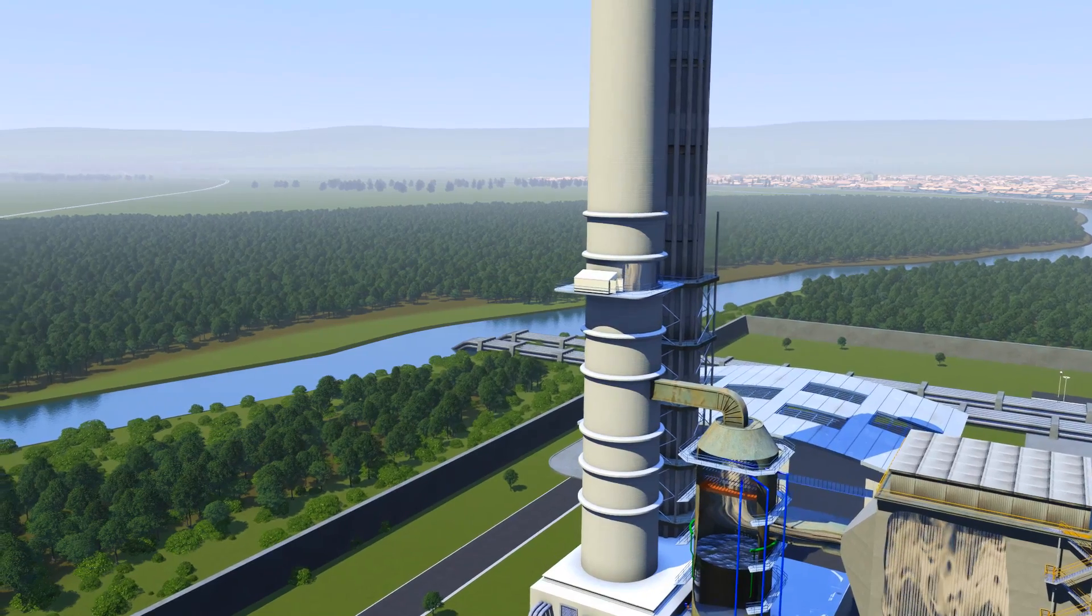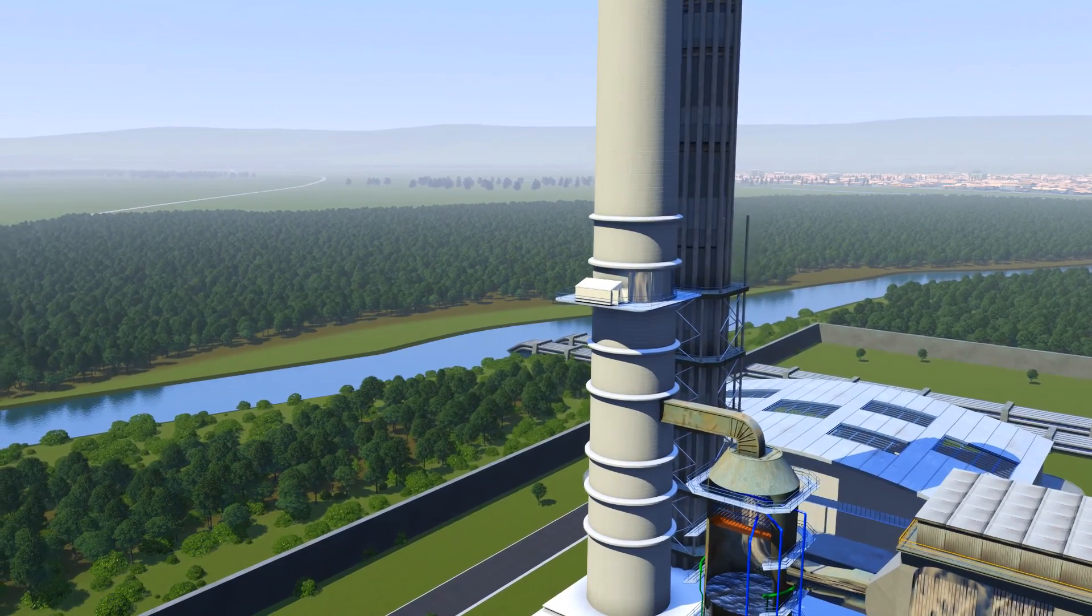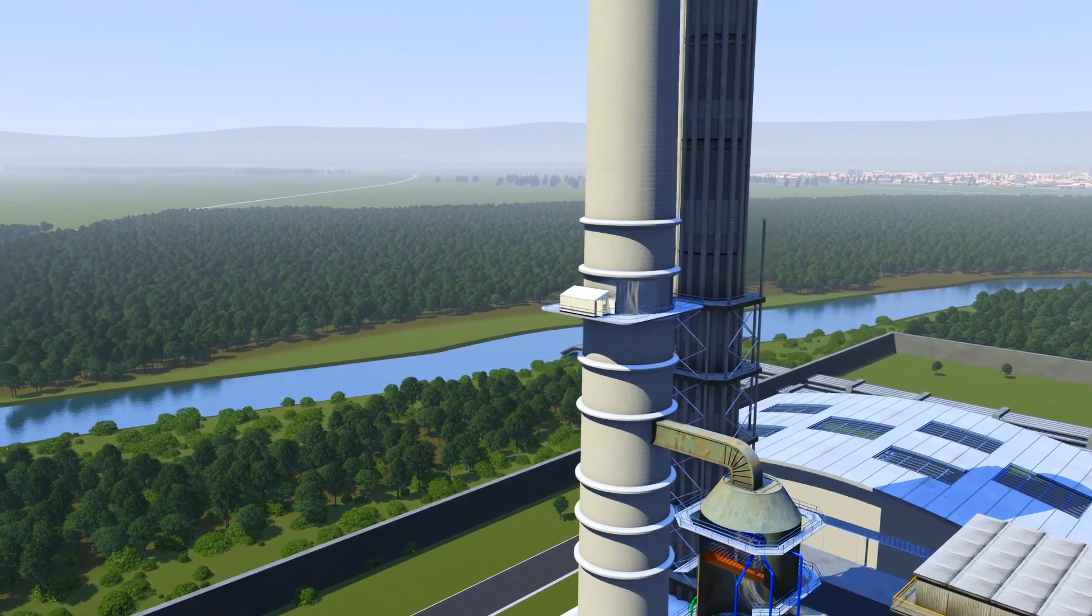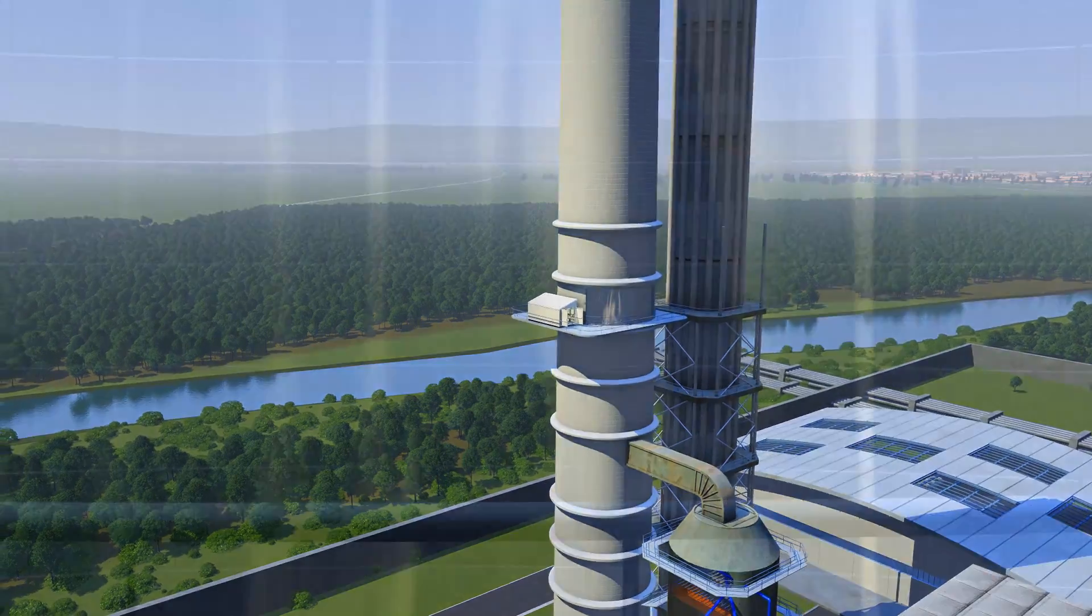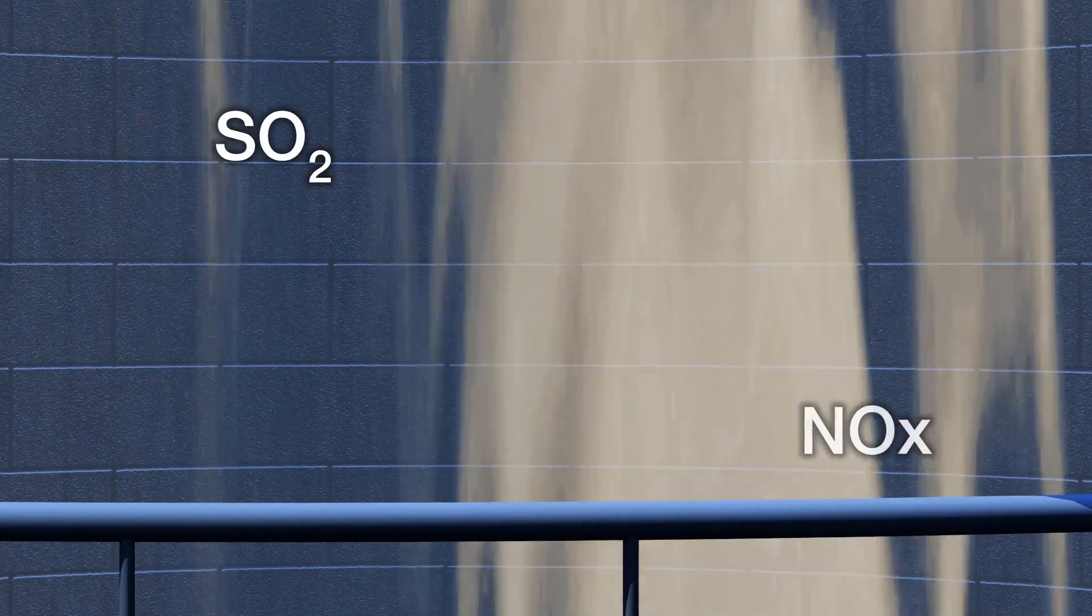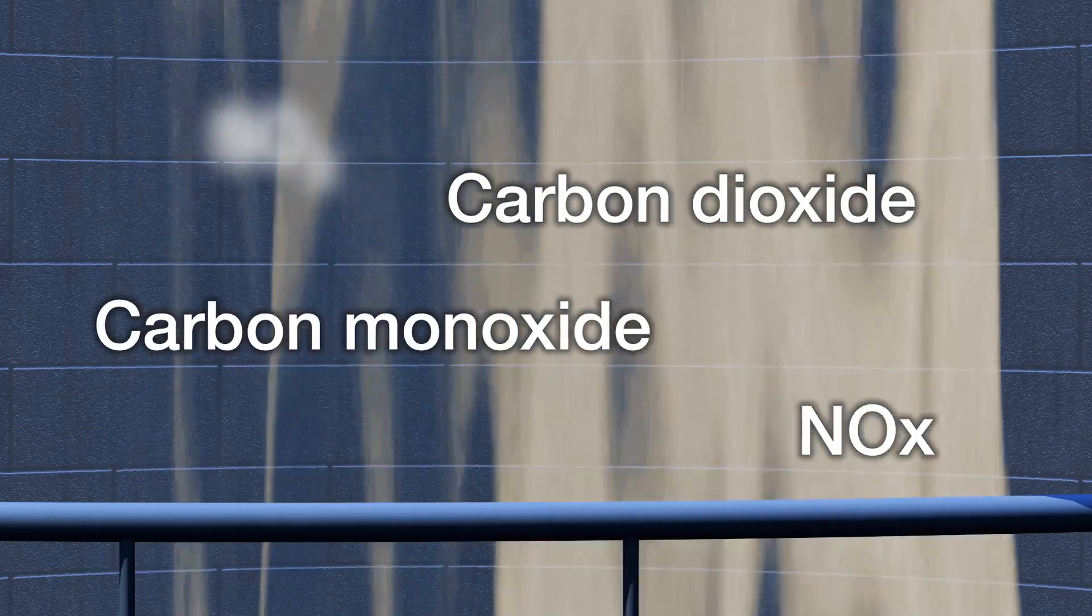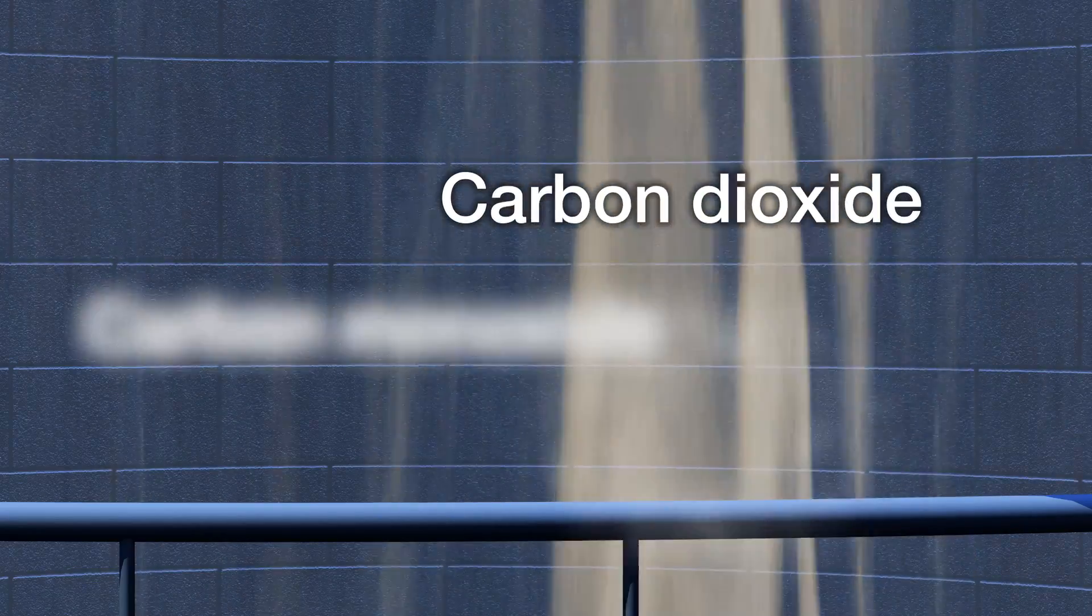As a way of quantifying these emissions, Continuous Emissions Monitoring Systems, or CEMS, help keep track of gases such as sulfur dioxide, NOx, carbon monoxide and carbon dioxide, to ensure that they are maintained within the correct limits.